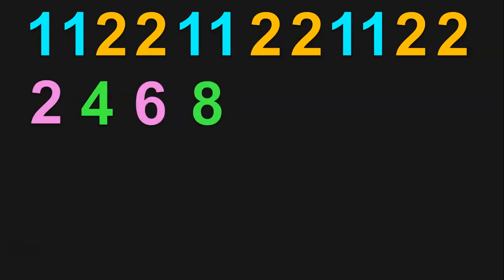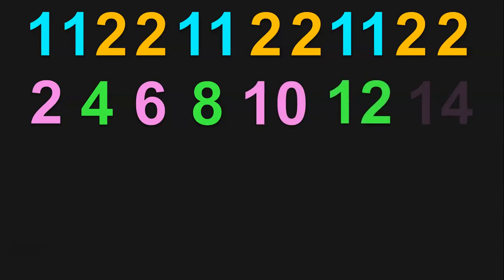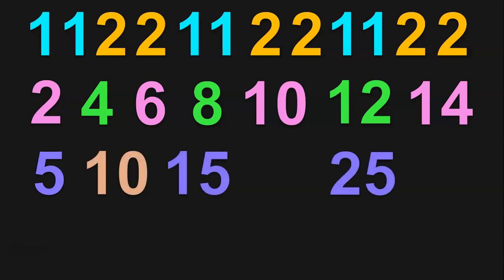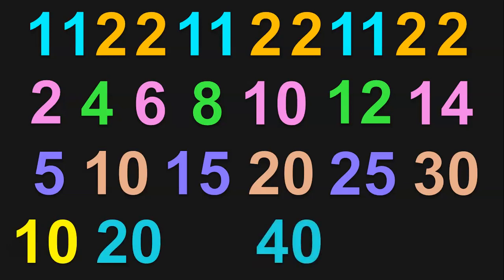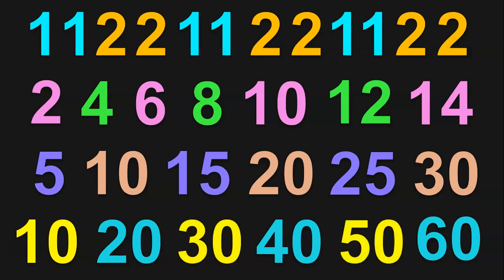Let us understand the next pattern: 2, 4, 6, 8. What do you understand from this? This is multiples of 2, or skip counting using the number 2. So what will be the next number? 10, followed by 12, followed by 14 and so on. Next, 5, 10, 15, a gap, 25 — fill in the gaps: it will be 20, and 25 will be followed by 30. This is skip counting by 5. Next, we have 10, 20, a gap, 40, a gap, 60 — this is skip counting by 10. So the gaps are filled with 30 and 50.